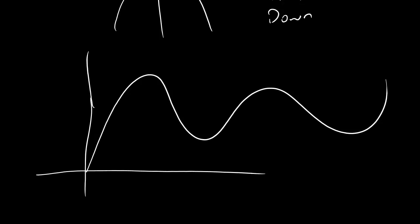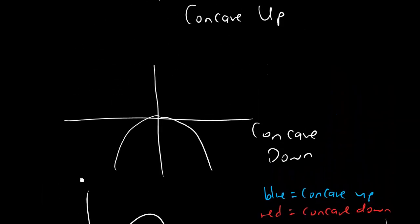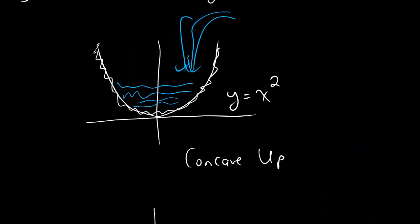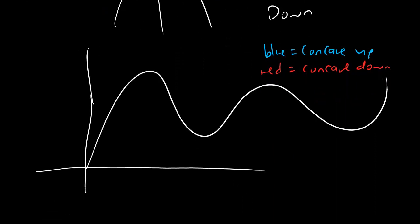We'll do a thing where we're going to draw some things in colors: we're going to use blue to mean concave up, and red to mean concave down. The idea is we want to find the parts of the graph that look like they're scoopy up the same way that this parabola is scoopy up. If you look at this graph long enough, it's pretty obvious that you've got some scoopy up behavior right around here, and some scoopy up behavior right around here. And similarly, we've got some scoopy down behavior right around here and some scoopy down behavior right around here.